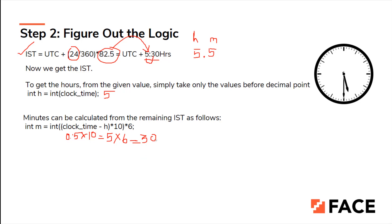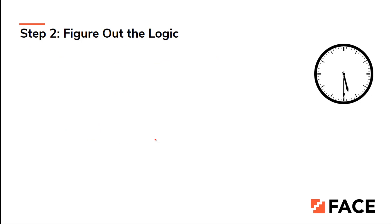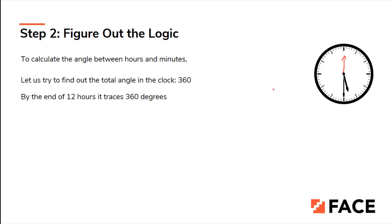After extracting hour and minute from the IST result, we calculate the angle difference. The total angle inside a circle is 360 degrees. The hour hand traces the full 360 degrees in 12 hours. So by the end of 12 hours, it traces 360 degrees.